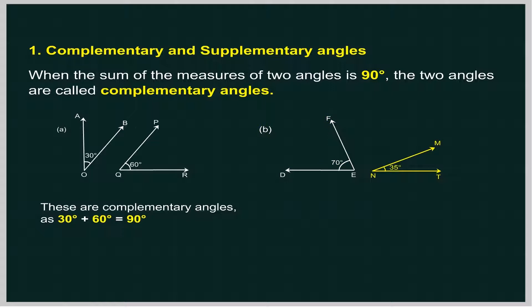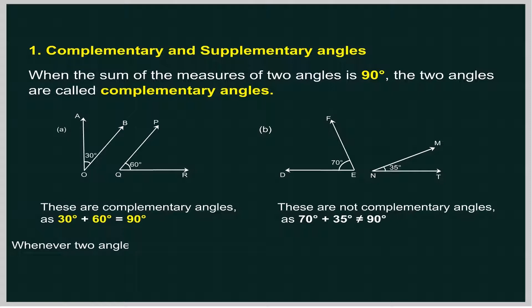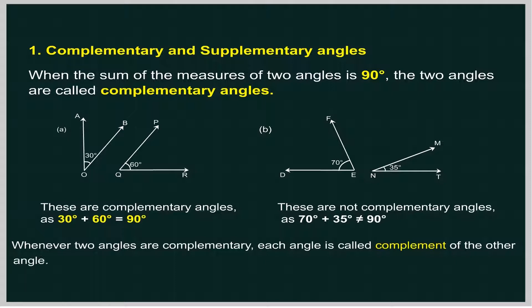Angle DEF equals 70 degrees and angle MNT equals 35 degrees. These are not complementary angles, as 70 degrees plus 35 degrees does not equal 90 degrees. Whenever two angles are complementary, each angle is called the complement of the other. Angle AOB is the complement of angle PQR and vice versa.